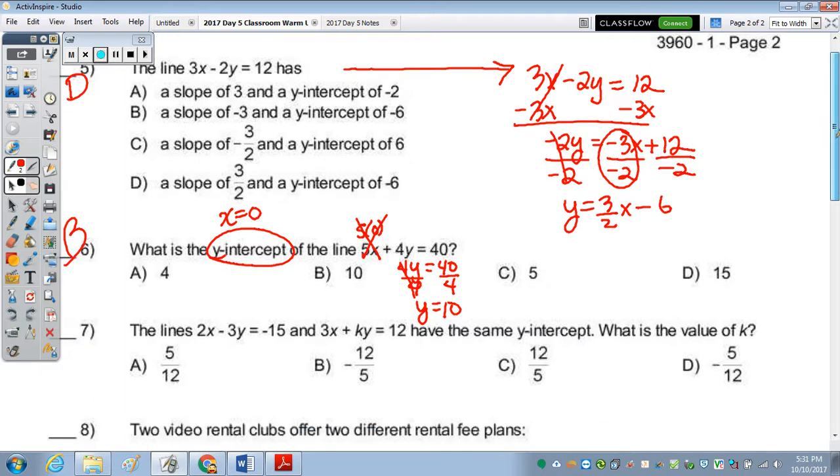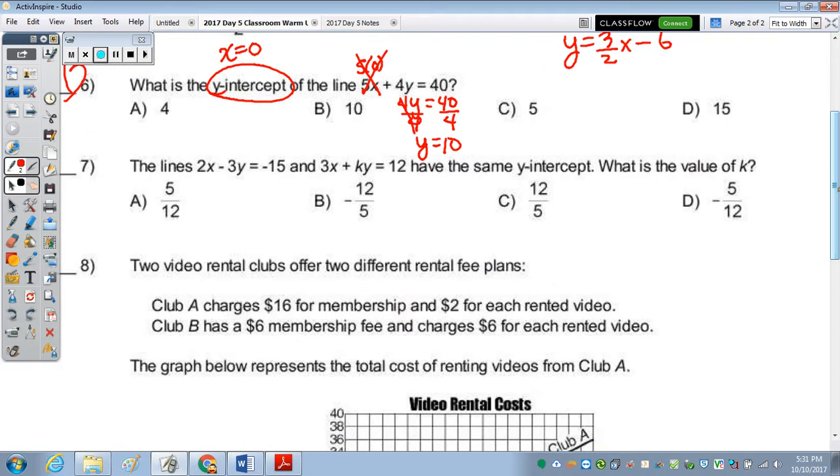The last two. 7 says the lines 2x minus 3y equals negative 15, and 3x plus ky equals 12. They have the same intercept. So what is the value of k? So we have to take each of the lines and put them in y equals mx plus b form. I think that's going to be easiest.